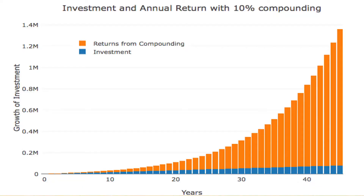In the figure on your screen, you will notice that as the years go by, the actual money invested, which is highlighted in blue, reduces in proportion to the total investment because the returns or interest generated, which is highlighted in orange, occupy a major part of the total investment, and this is solely due to compounding.